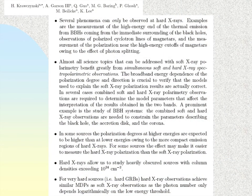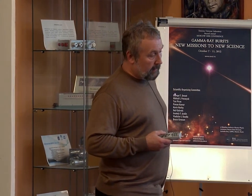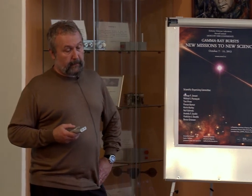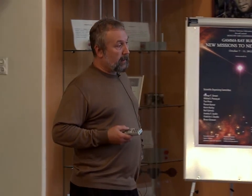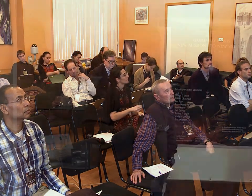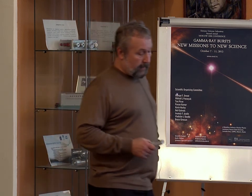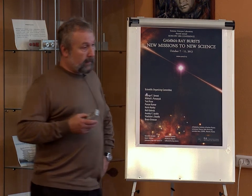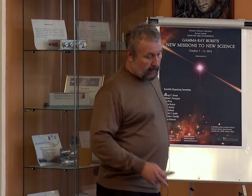Polarization measurements do not have such wide experience in astrophysics as spectral and temporal measurements, due to lack of statistics and because polarimeters are very complicated instruments — polarimetric measurements are very complicated techniques. To the present time, only a few experiments have successfully measured polarization of high-energy emission from astrophysical objects. Thus, we think it is very important, both for GRB study and for other astrophysical objects, to measure polarization in X-ray and gamma-ray emission.